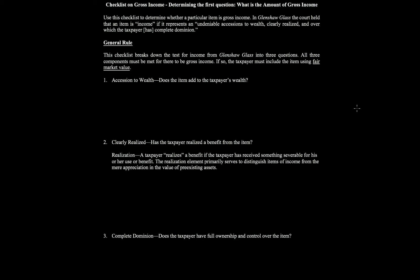The first question is: is there an accession to wealth, meaning does the item add to the taxpayer's wealth? The best way to consider this is by looking at the net worth of the taxpayer. Net worth is assets minus liabilities equals net worth. If the net worth increases, then an accession to wealth has occurred. Assets can go up, liabilities can go down, or both.